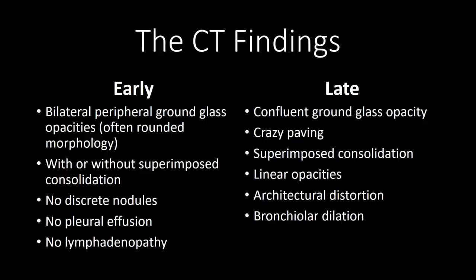Crazy paving is being reported, which is a pattern within the ground glass opacification where there is also septal line thickening that creates the look of stone pavers. Later in the disease, consolidation is more commonly reported, superimposed on areas of ground glass opacification. There are also linear opacities developing later in the disease associated with architectural distortion, and bronchiolar dilation within the areas of opacification.